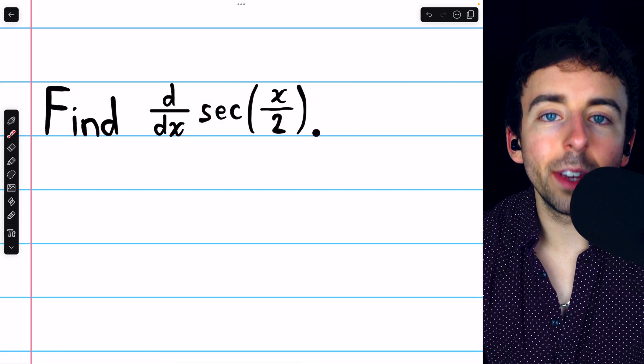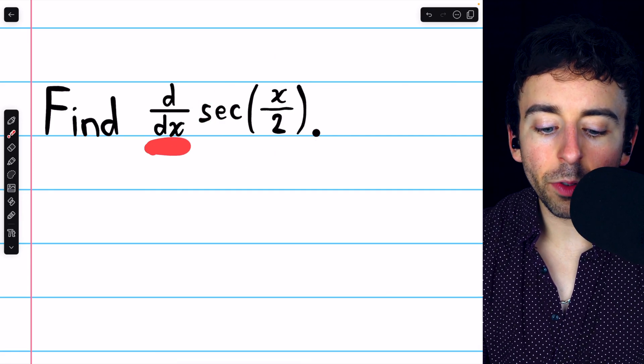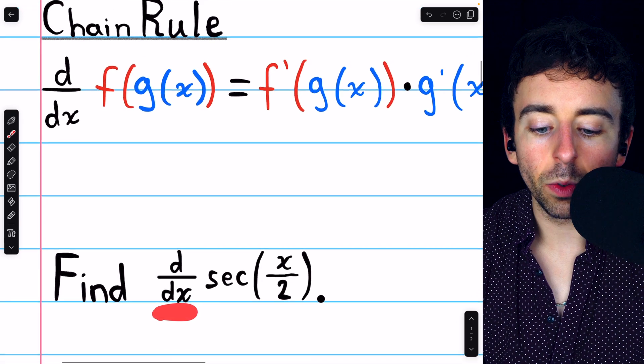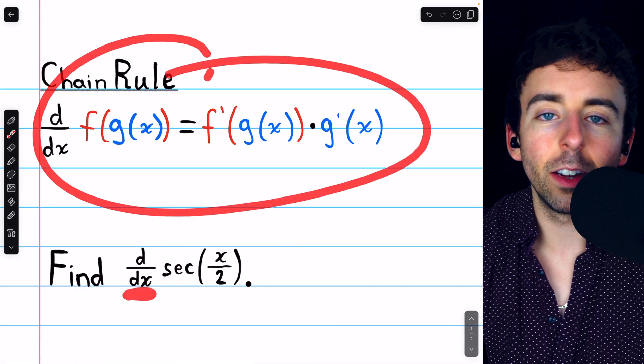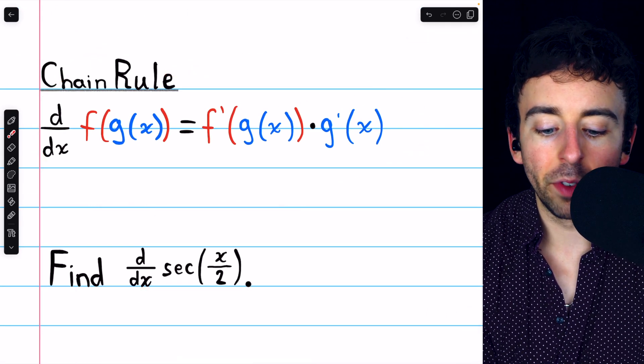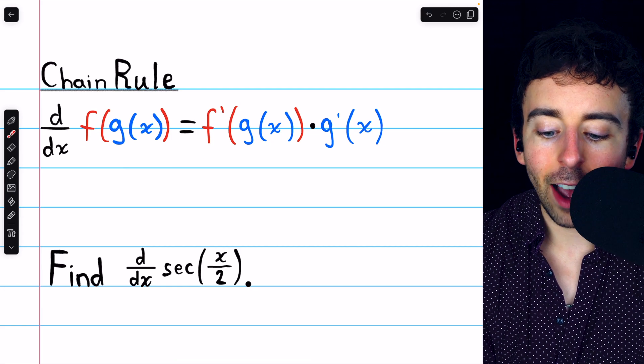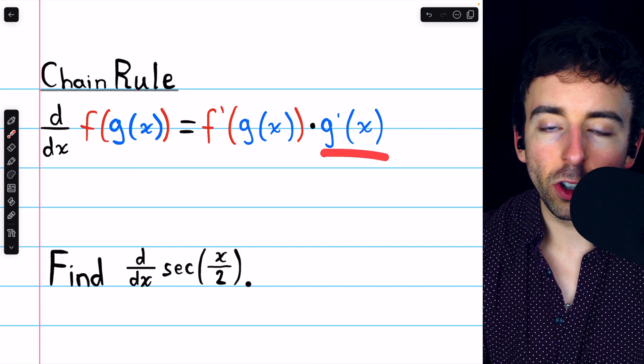Secant of x over 2 is a composite function, so to find its derivative we need to use the chain rule, which I've written here for your reference. The derivative of f of g is f prime of g times g prime.